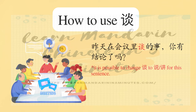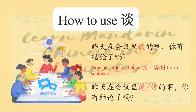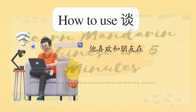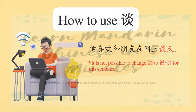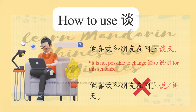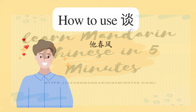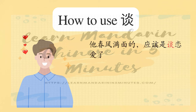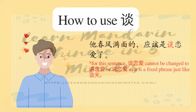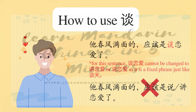For example: 昨天在会议里谈的是，你有结论了吗? (What was discussed in yesterday's meeting — have you reached a conclusion?) Also: 他喜欢和朋友在网上谈天. It is not possible to change 谈 to 说 or 讲 here — 说天 or 讲天 are incorrect. Similarly, 他春风满面的，应该是谈恋爱了 uses the fixed phrase 谈恋爱, which cannot be changed to 讲恋爱 or 说恋爱.